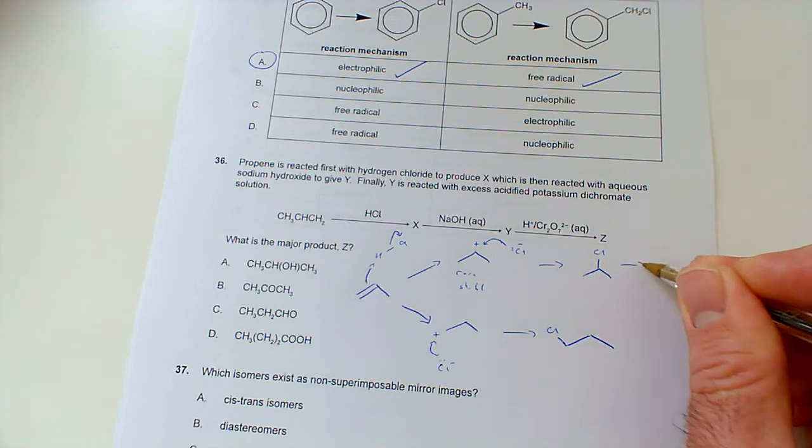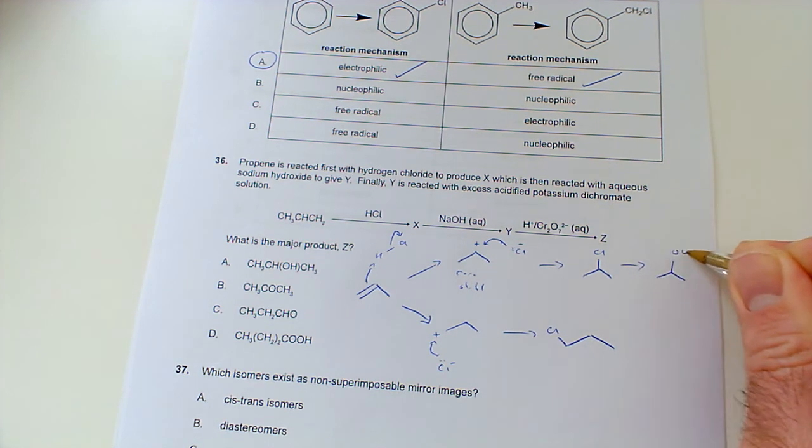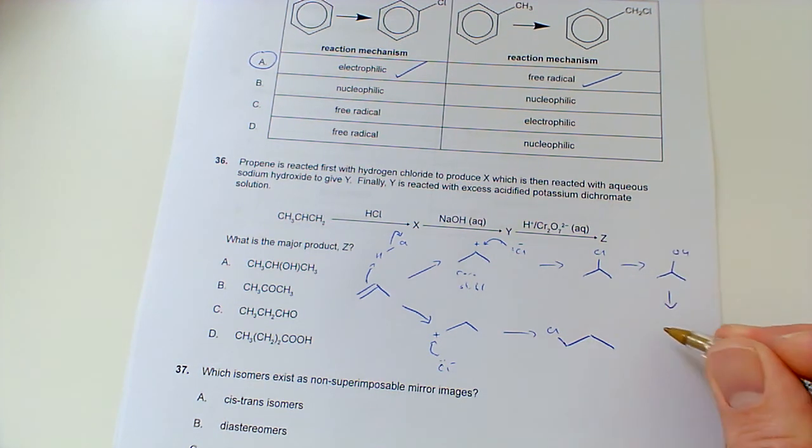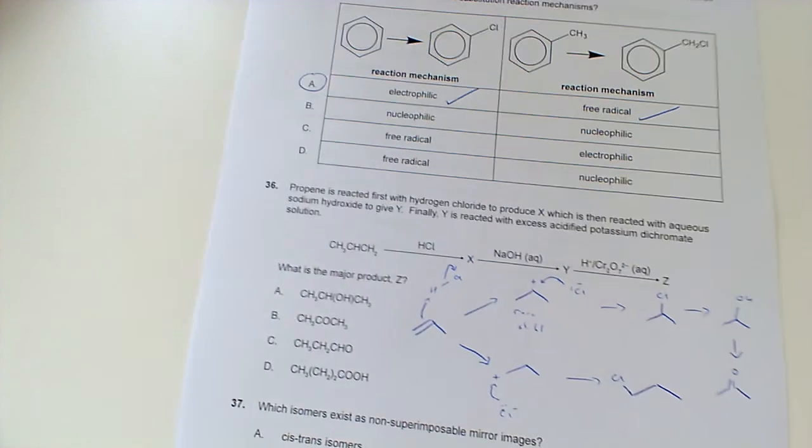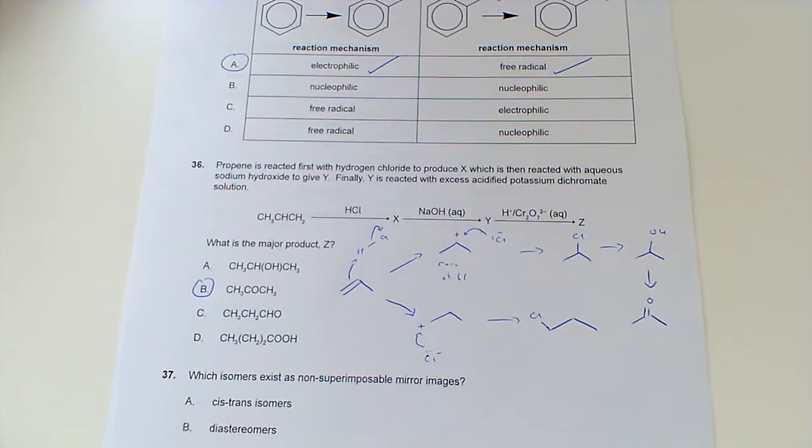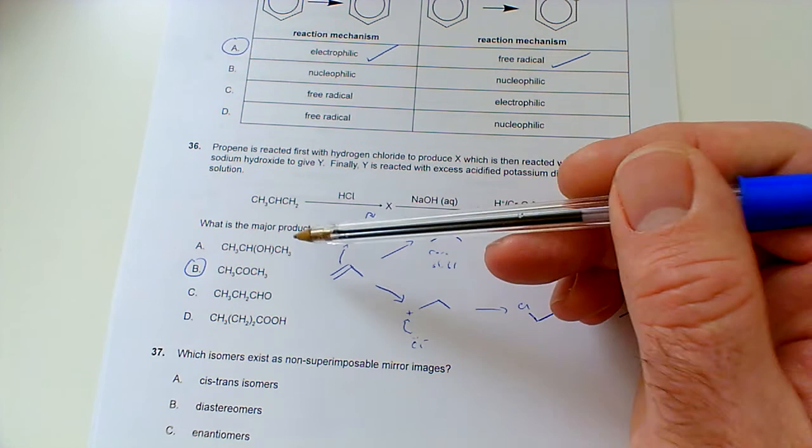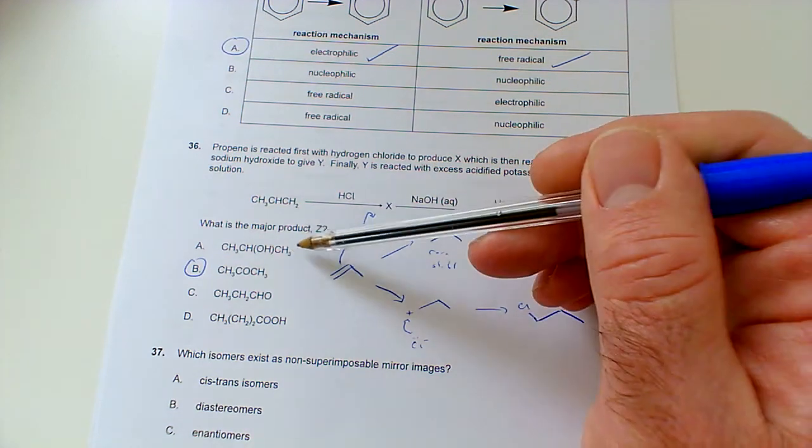When we hydrolyze that with sodium hydroxide, we'll get this alcohol, and then when we oxidize that with dichromate, we'll get this ketone. So, our answer is B, okay? Because that's the intermediate product, Y, not Z.